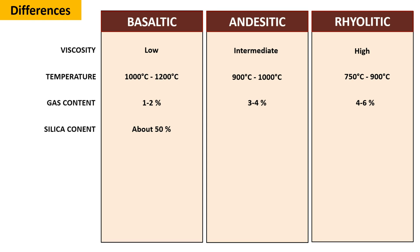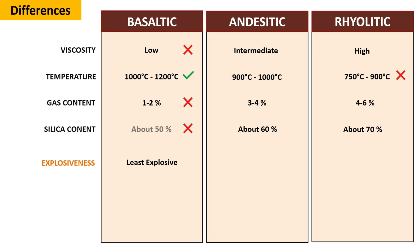Acidic magma contains a moderate silica content of around 60 percent, while rhyolitic magma reaches the highest silica content at approximately 70 percent. Regarding explosiveness, basaltic magma is the least explosive due to lower viscosity, gas, and silica content. Acidic magma has intermediate explosiveness, while rhyolitic magma is the most explosive due to higher viscosity, gas, and silica levels.